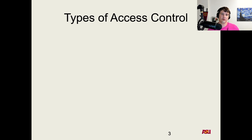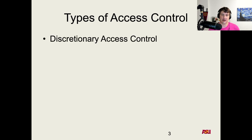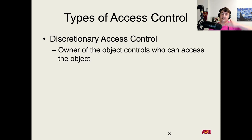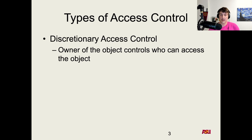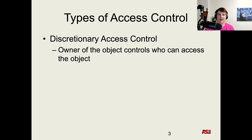We're going to broadly categorize access control models into three different models and deep dive into one of them in the rest of this module. The type we've already looked at is the POSIX model — discretionary access control, or DAC. The owner of a file can choose to change the permissions on that file and give people different access, so the owner of the object controls who can access it. As we discussed with the homework system and shared server, discretionary access control can cause problems because a user can inadvertently make their files readable to somebody else, since they own the file and can decide its permissions.